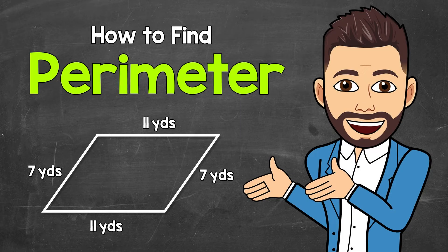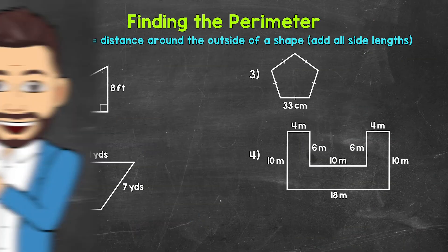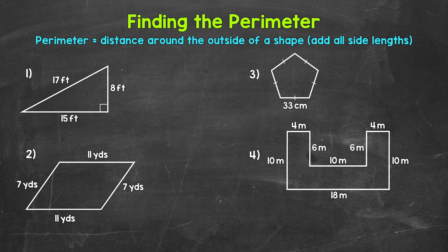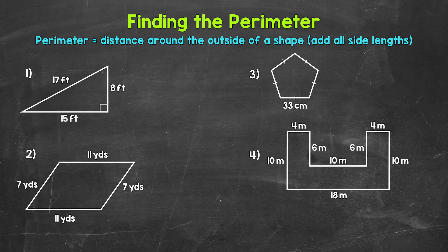Welcome to Math with Mr. J. In this video, I'm going to cover how to find the perimeter of a shape. Now the perimeter is the distance around the outside of a shape. We will go through four different examples in order to see how to do this.